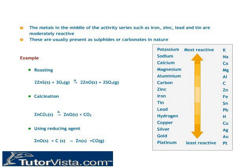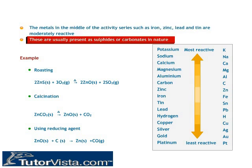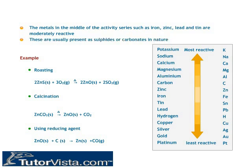Extracting metals in the middle of the activity series: Metals such as iron, zinc, lead, and tin are moderately reactive and are usually present as sulfides or carbonates in nature. Sulfide ores are converted into oxides by heating strongly in the presence of excess air — a process known as roasting. Carbonate ores are changed into oxides by heating strongly in limited air — a process known as calcination. The metal oxides are then reduced to the corresponding metals by using suitable reducing agents such as carbon.